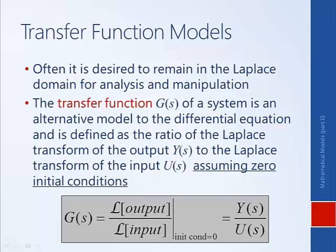For example, it could be an electric motor, and U is the input and Y is the output. So U could perhaps be voltage and Y perhaps could be speed. So that's the general form.